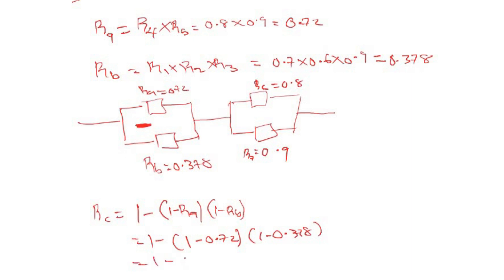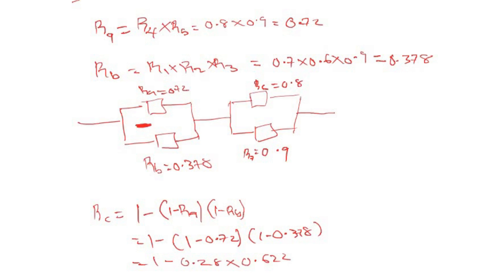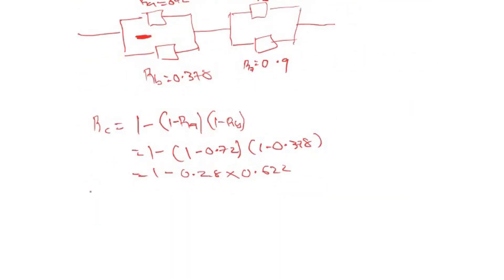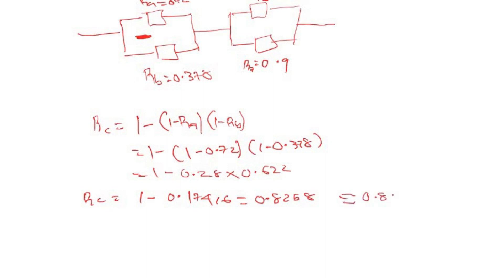This simplifies to R_C = 1 − (0.28 × 0.622) = 1 − 0.17416 = 0.8258, which is approximately 0.83.